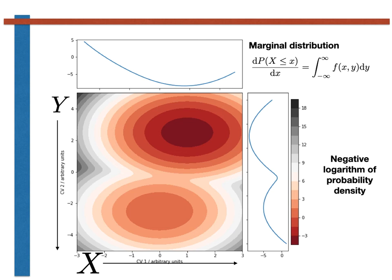To summarise, we have introduced the joint probability density function for a pair of continuous random variables and we have discussed how the marginal distributions can be computed by taking integrals. For discrete random variables, we saw that the marginals were calculated by taking sums rather than integrals. In addition, for discrete random variables, I also explained how quantities such as the expectations, covariances and so on could be computed by taking sums. Much like the marginal distributions, in calculating these quantities for continuous random variables, you simply replace the sums by integrals. The exercises contain examples that show you how this is done in practice, and you will have the opportunity to complete these quantities by hand and using a computer algebra package.